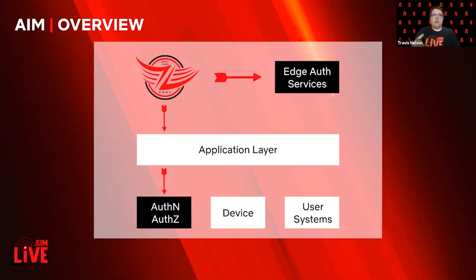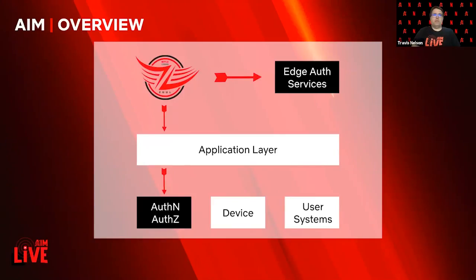Those application layer services then reach out to various AIM services at various points, depending on what's necessary at a given time. If we need to do authentication or authorization, we go into the AuthN and AuthZ bucket represented there. We also have the ability to give device information, represented by the device box. And we have the ability to give user profile-related information, shown in the lower right quadrant. Next, I'll drill down further into both the edge auth services and the authentication and authorization services.